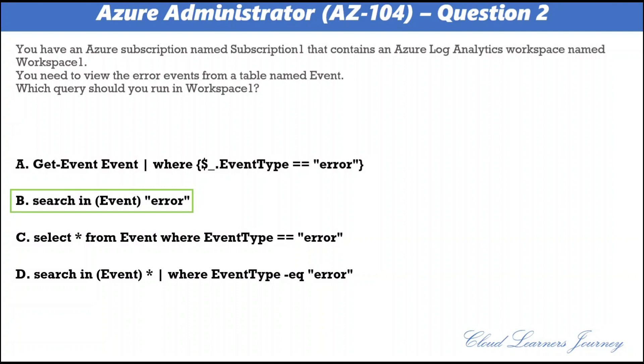There are several versions of this question in the exam. The question has two possible correct answers: Event pipeline where EventType equal to error, and search in Event error.